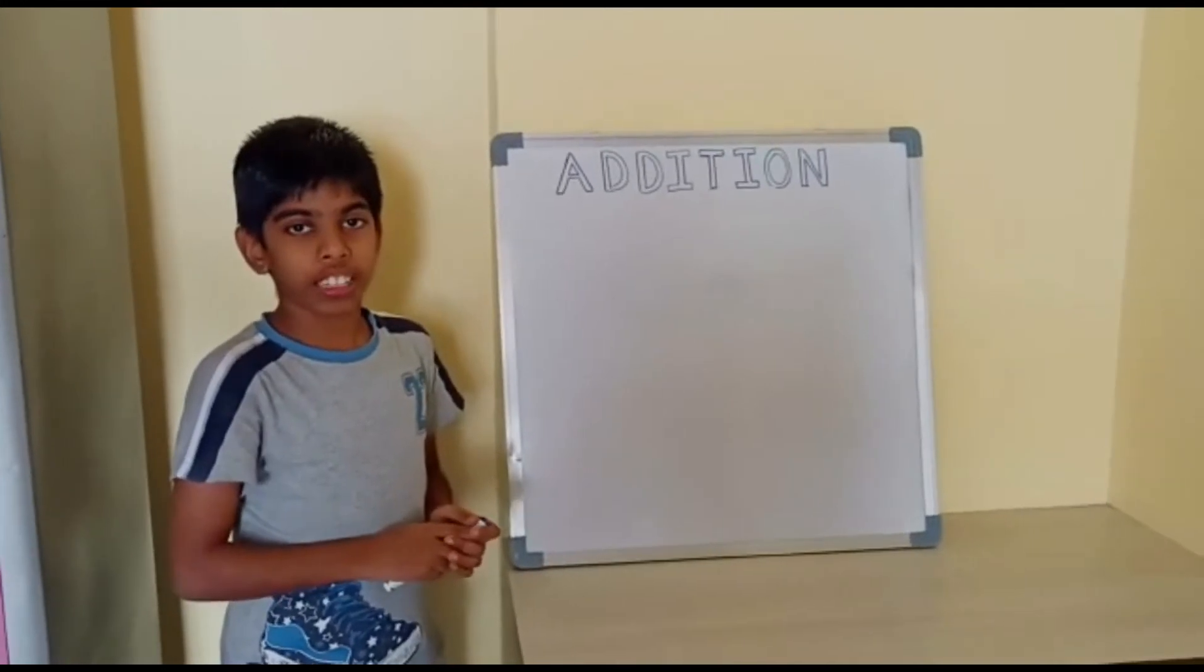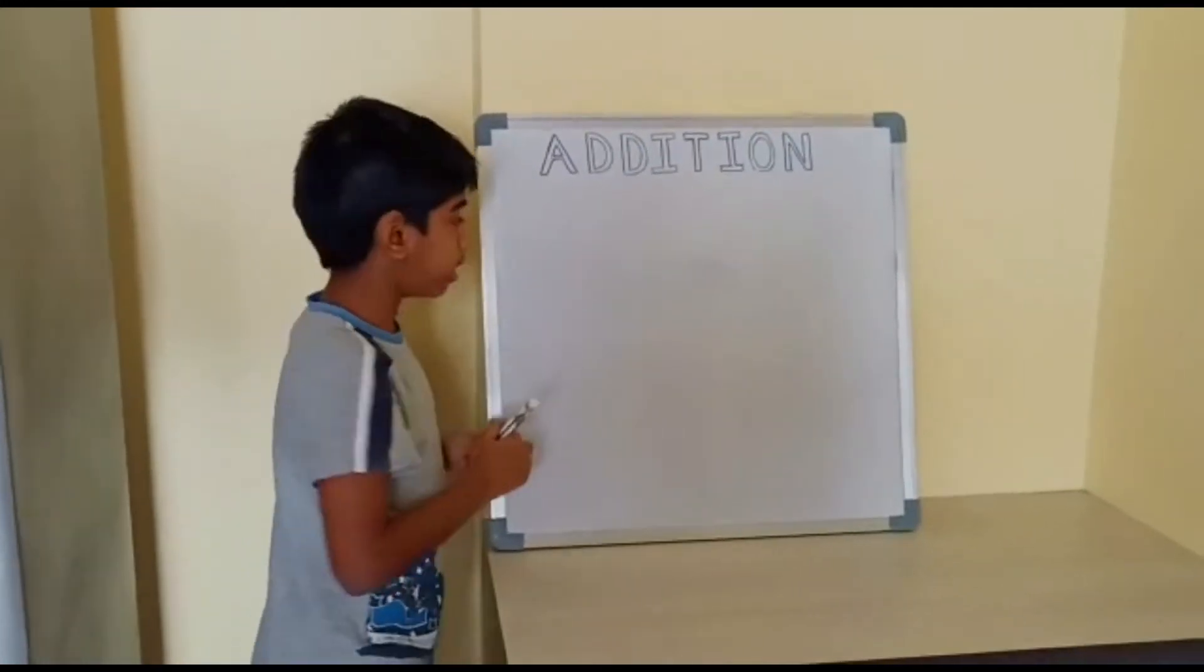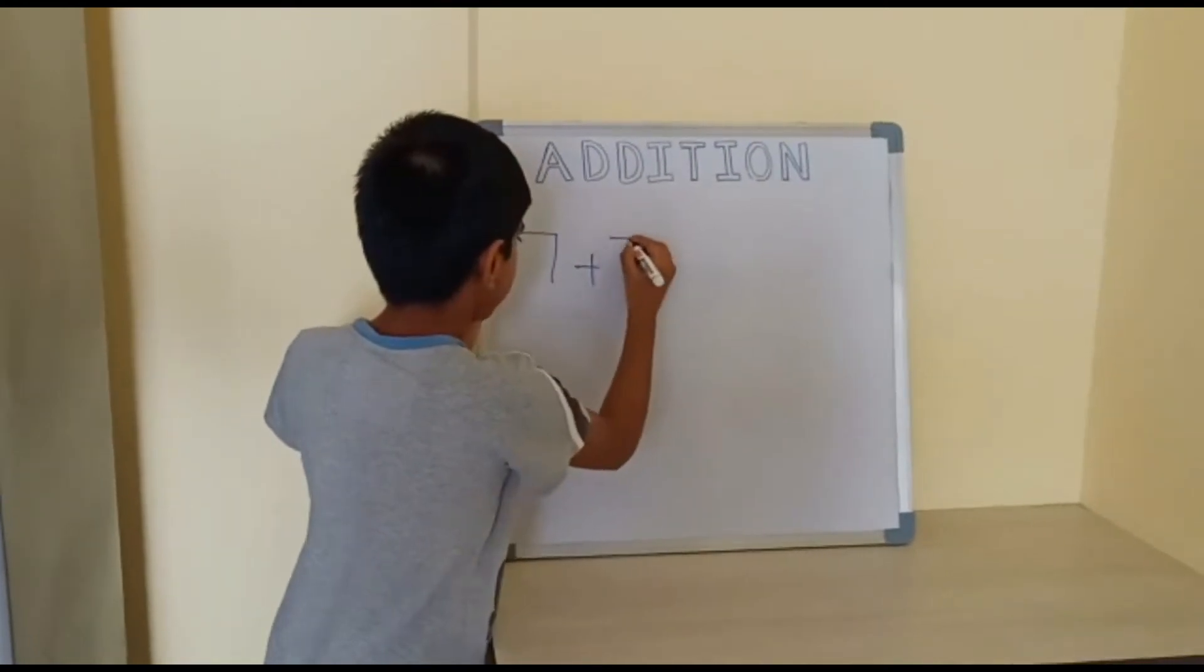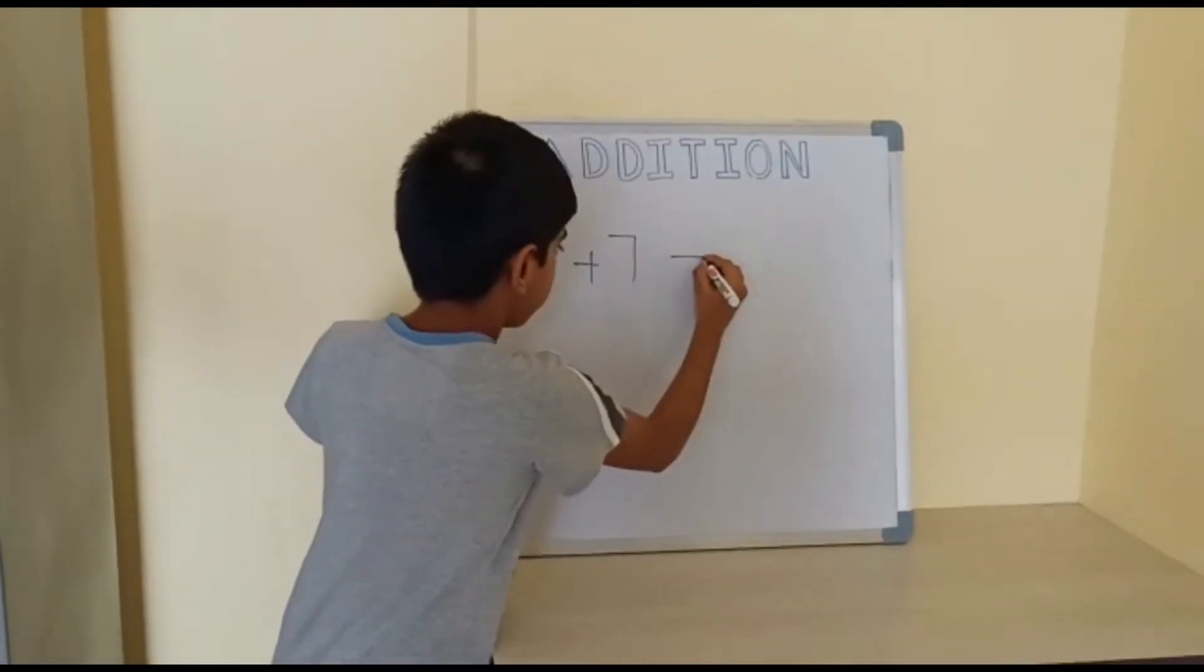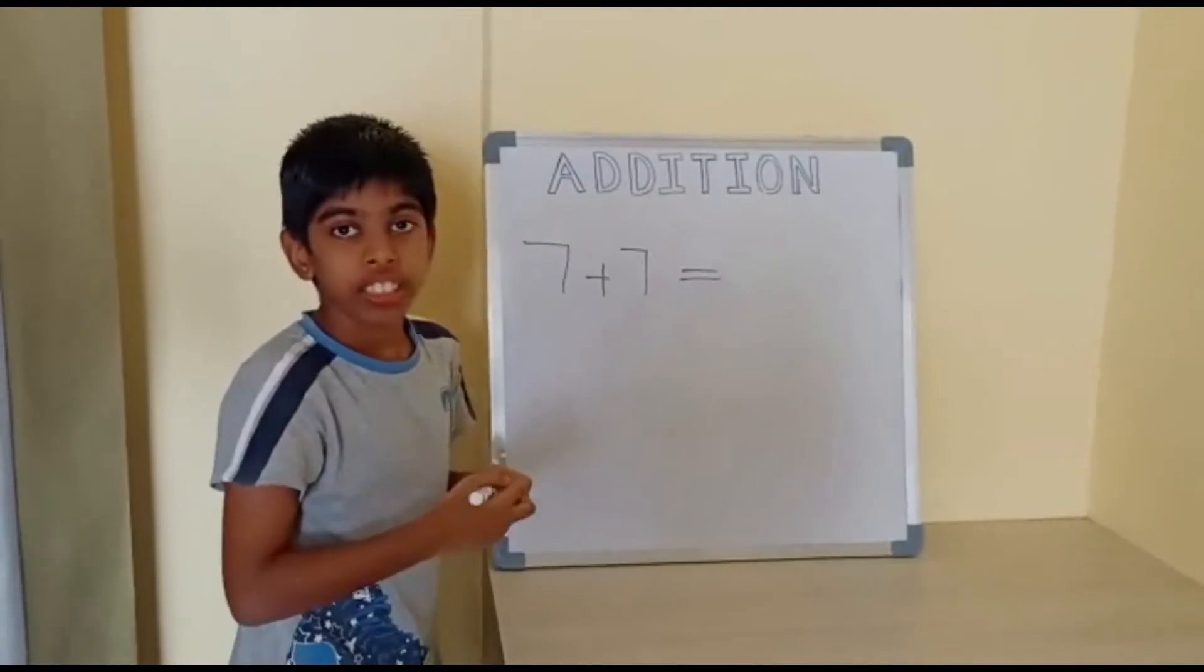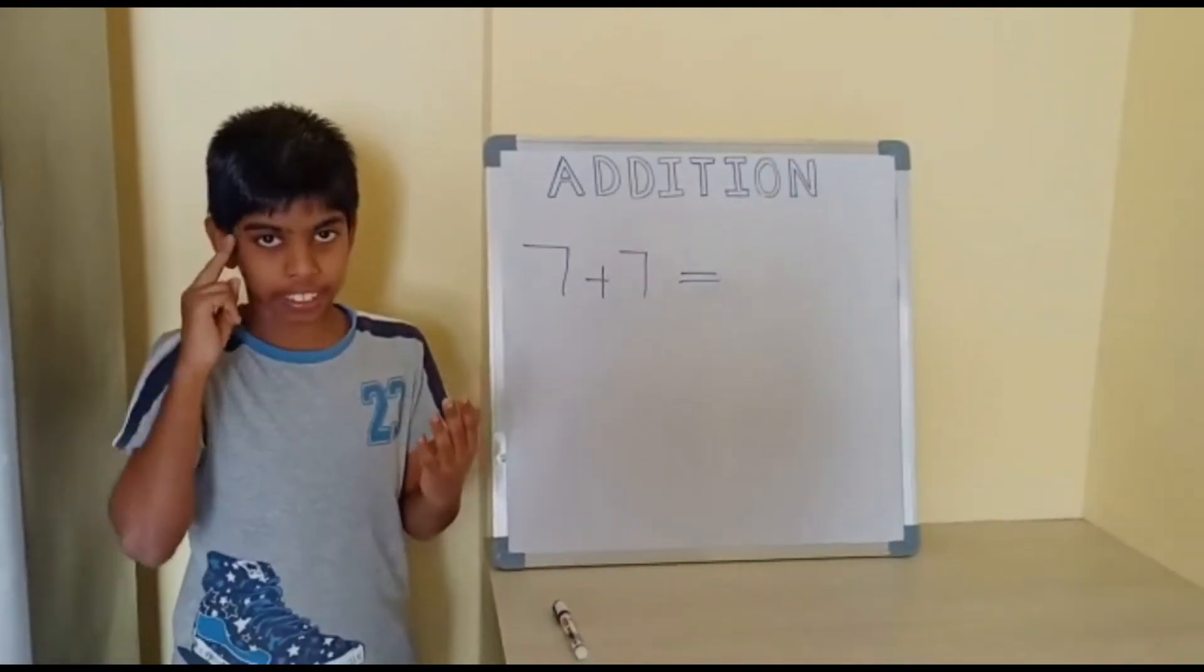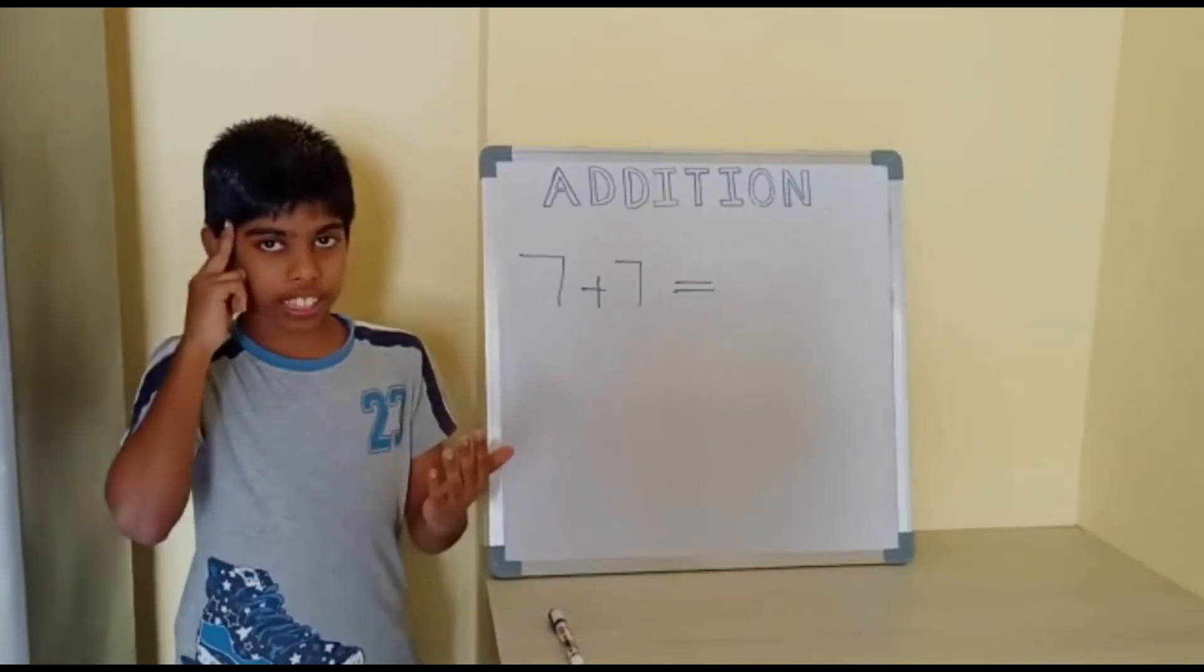Now another method. The question is 7 plus 7 equals to 7 in the hand and 7 in the mind. Now 7 in the mind.